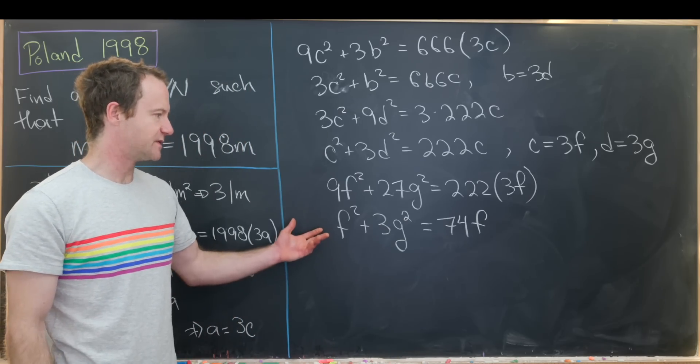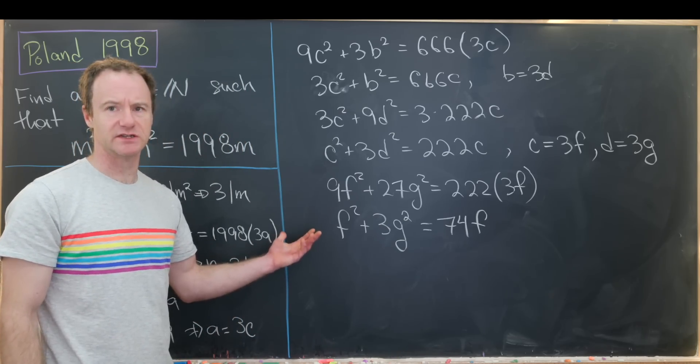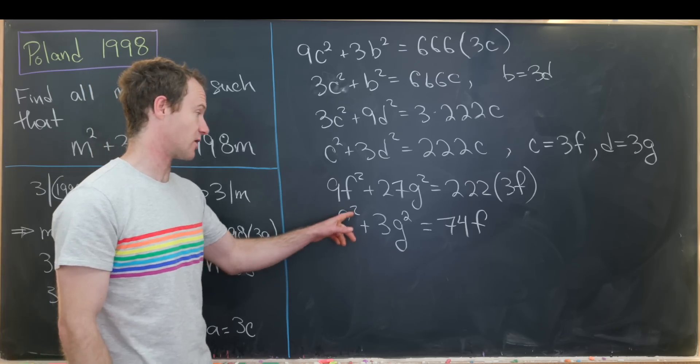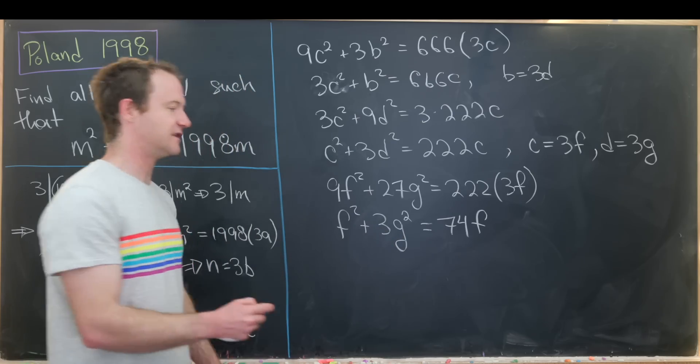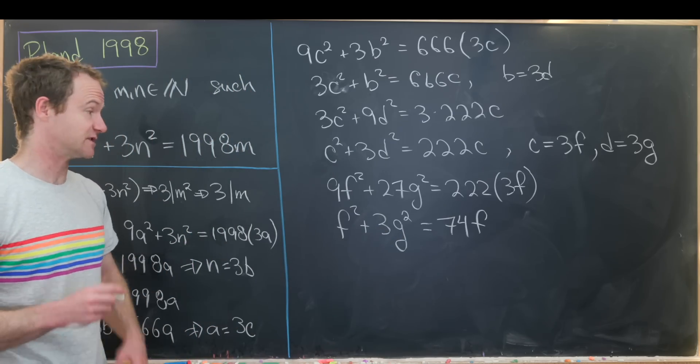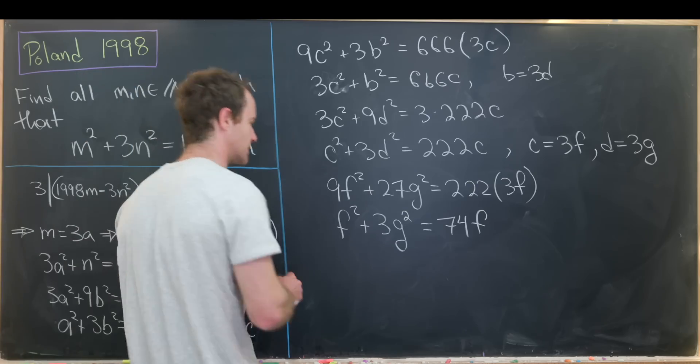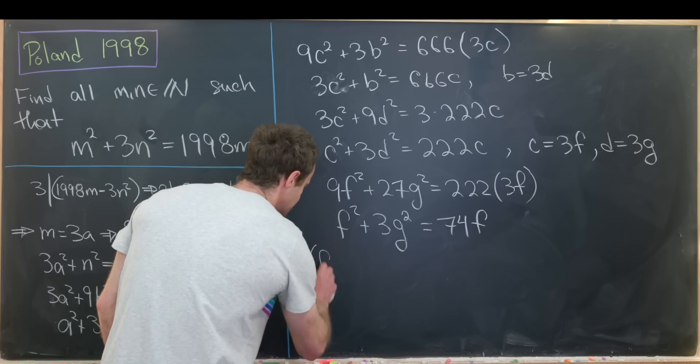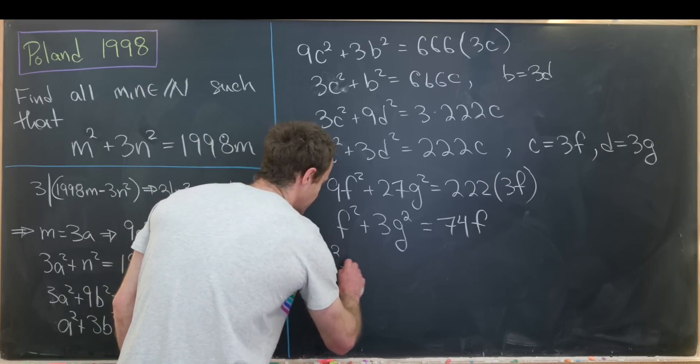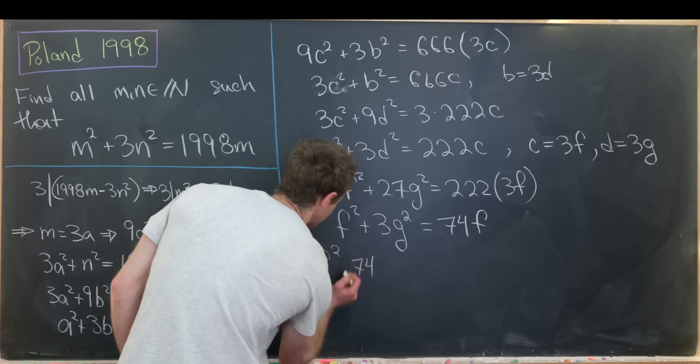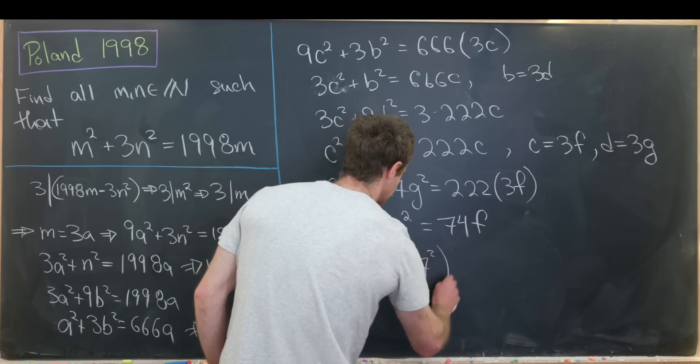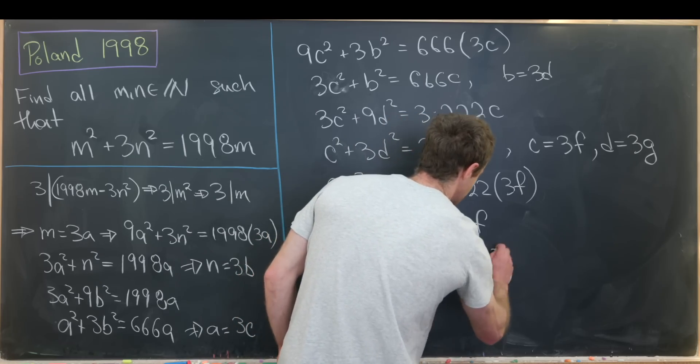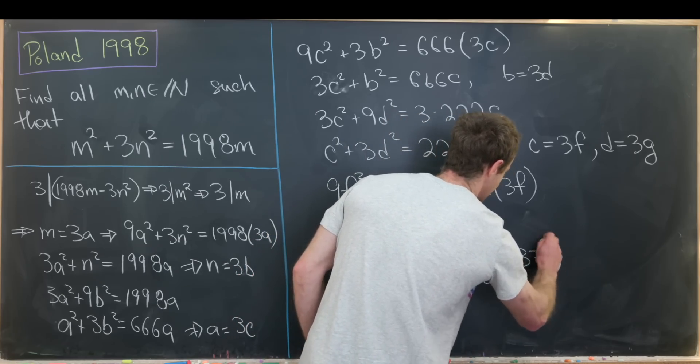But now we're in the position where we'd probably like to complete the square on this f squared and the 74f term. So I'll move the 74f to the other side and then add something to both sides of the equation in order to complete that square. So in this case, it'll look like f squared minus 74f plus 37 squared plus 3g squared equals 37 squared.